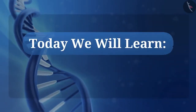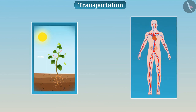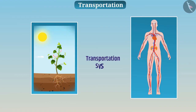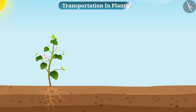Today we will learn about transportation. The process of transportation of various substances in the body of the organism is accomplished by the transportation system. Let us first talk about transportation in plants.